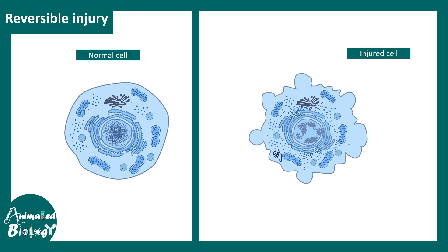Let's talk about reversible injury and what has changed microscopically in an injured cell. The first thing altered is ATP production. ATP production happens in the mitochondria, the powerhouse of the cell. When ATP production is low, all the biochemical pathways required for proper cellular functionality are compromised — meaning overall cellular function is compromised.